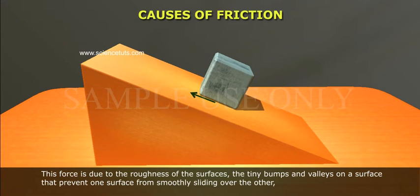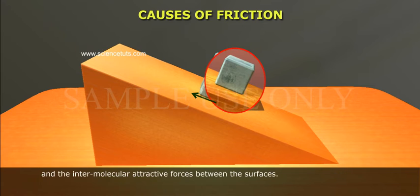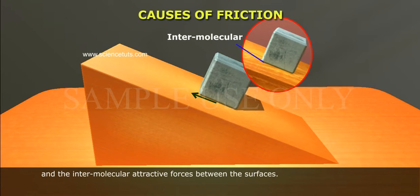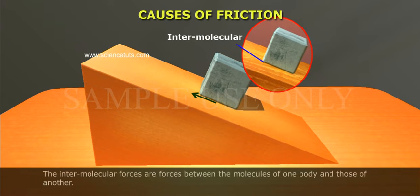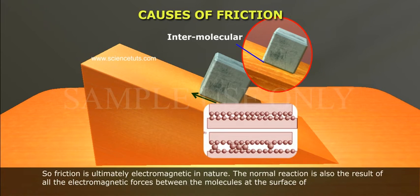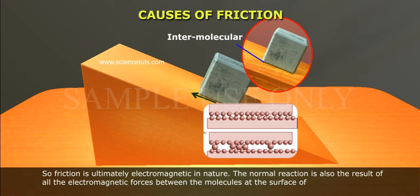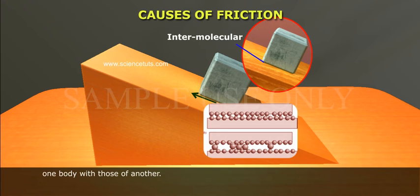This force is due to the roughness of the surfaces — the tiny bumps and valleys that prevent one surface from smoothly sliding over the other — and the intermolecular attractive forces between the surfaces. These intermolecular forces act between the molecules of one body and those of another, so friction is ultimately electromagnetic in nature.